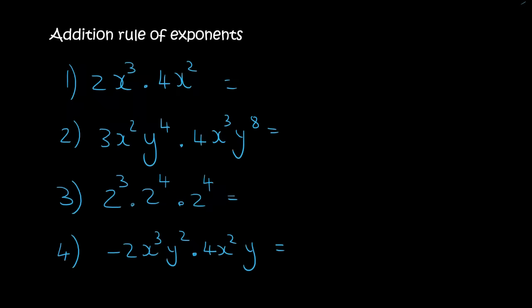Why don't you pause the video and try these ones? So for the first one, 2 times 4, do the 2 and the 4 have exponents on them? No, they don't. So we can multiply them, no problem. Then the x's have exponents, and so we have to add.